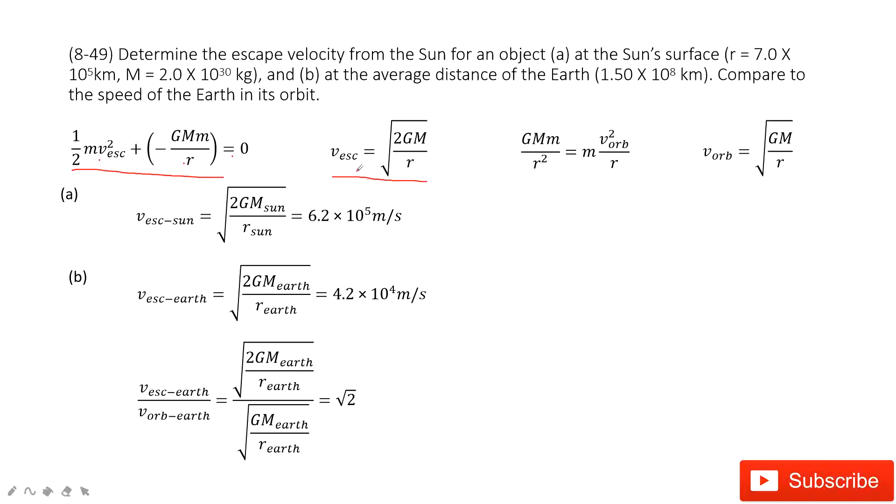So we can solve this equation easily to get this one. Escape velocity equals the square root of 2GM divided by r. And also we know if this object, just this planet, does circular motion around the Sun,